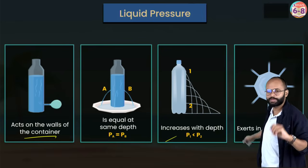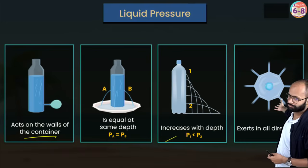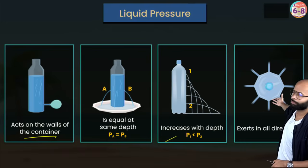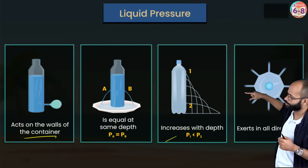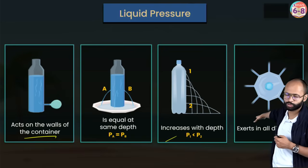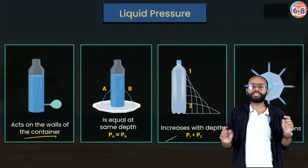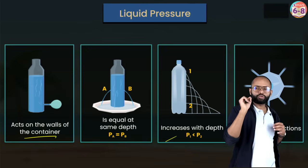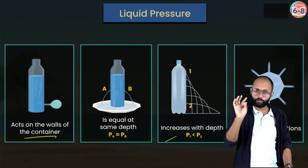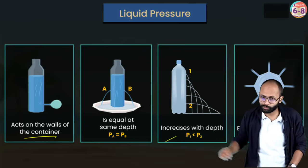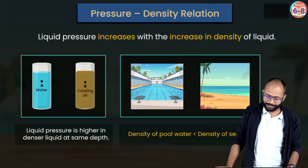To summarize liquid pressure properties: pressure increases with depth; pressure is the same at the same level in all directions; and liquid exerts pressure in all directions at any given level. Punch many holes at one single level and water comes out equally in all directions. These four properties of liquid pressure are a direct exam question.